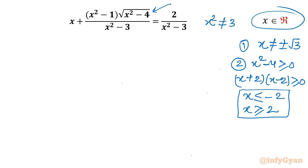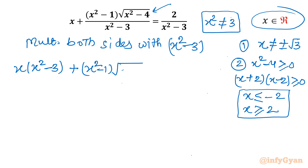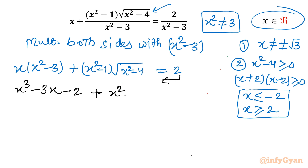Now let's solve this equation. Since x² ≠ 3, we can multiply both sides by (x² - 3). Writing it out: x·(x² - 3)·√(x² - 4) equals 2. Expanding and moving 2 to the left-hand side gives: x³ - 3x - 2 + (x² - 1)·√(x² - 4) = 0.